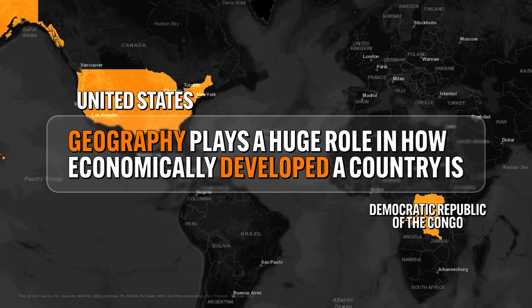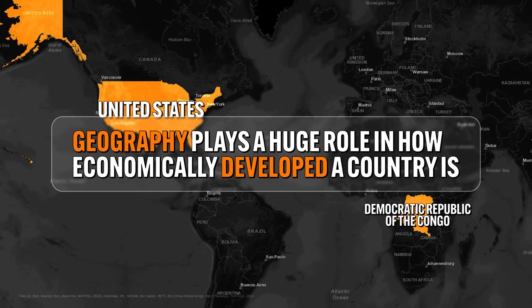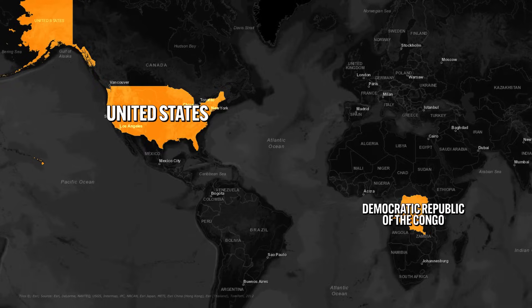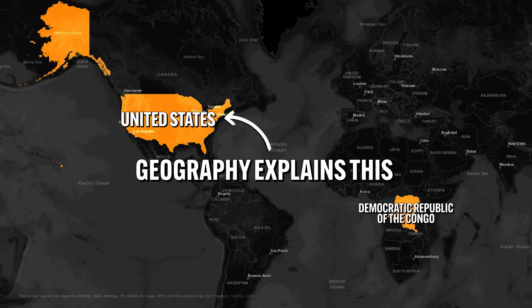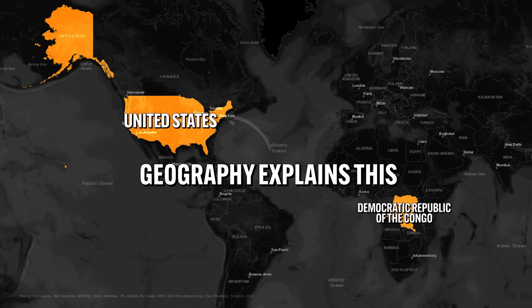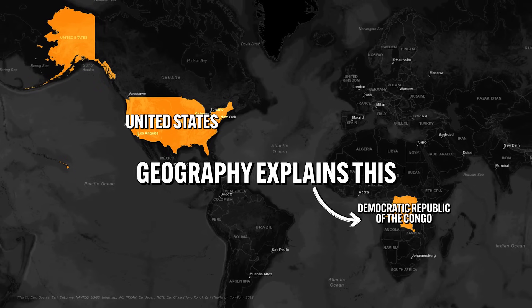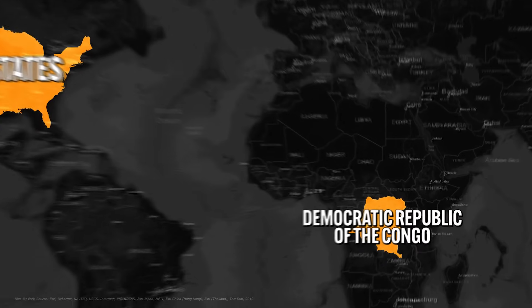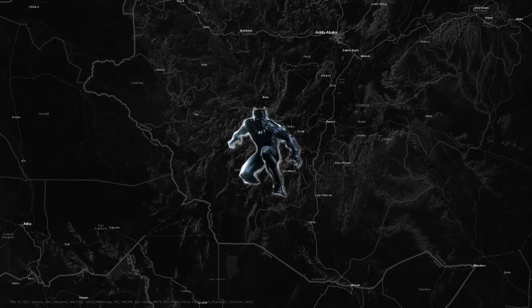Geography plays a huge role in how economically developed a country is, whether it's wealthy or impoverished. It makes all the sense in the world, geographically speaking, that the United States is wealthy because of where it is on the map, and that the Democratic Republic of the Congo is economically poor because of where it is on the map. But what would blow a human geographer's mind would be if there was an extremely developed and wealthy country in Central Africa — like, you know, Wakanda. In that case, all their theories would be about as useful as steel in a vibranium fight.